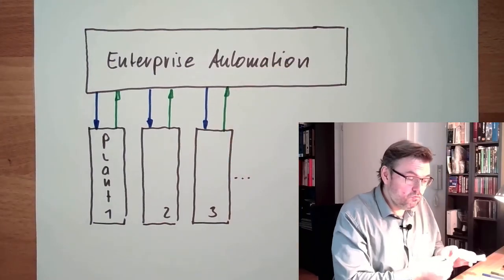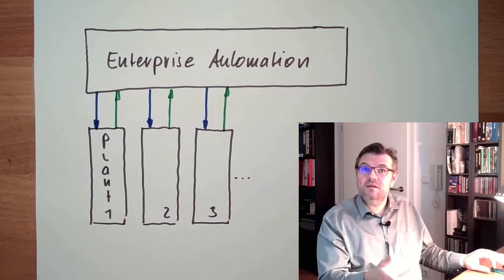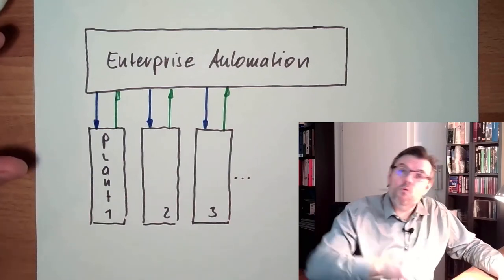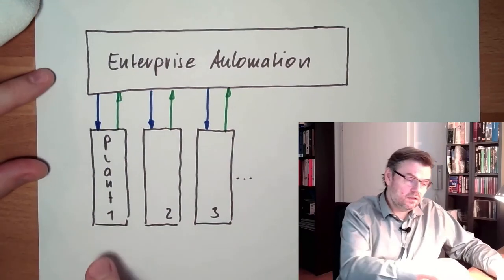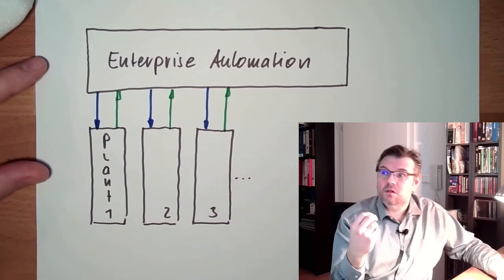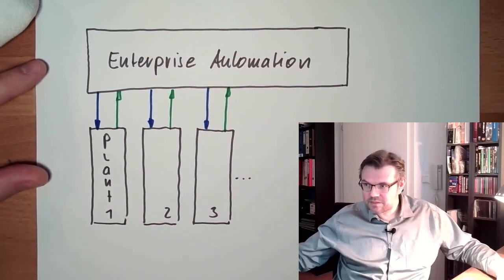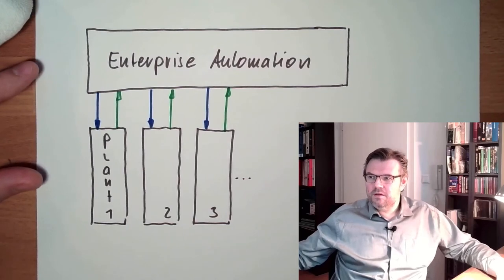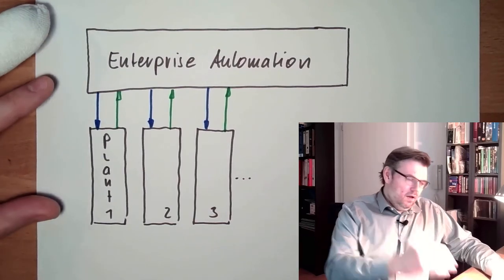We need to start another unit instead. Or what happens if a whole plant has an error? Then we need—it's always the error case which is causing the most trouble. That's for sure.